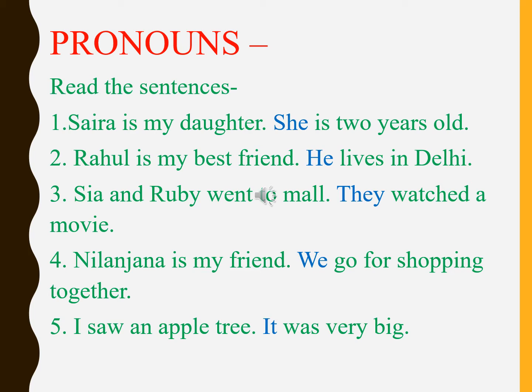Number five: I saw an apple tree. It was very big. Now students, here we are talking about a tree — an apple tree. So tree is a thing, and whenever we talk about any thing or any animal, the pronoun that is used is 'it'. So instead of tree, the pronoun used here is 'it'.